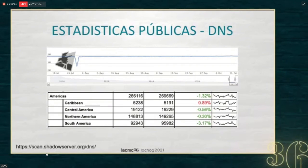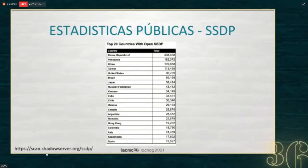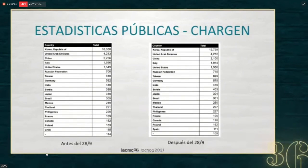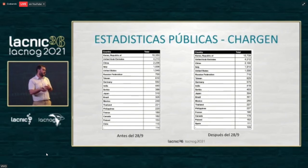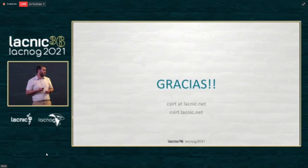There are thousands of IPs with open resolvers that attackers could use. In SSDP, there are some countries we are trying to remove from the top 20. For the CHARGEN protocol — a protocol to generate characters to verify connections work, which generates a very large response — before September 28th, Chile was in the top list. After September 28th, we managed to remove Chile from that top list by exchanging emails with the organizations.